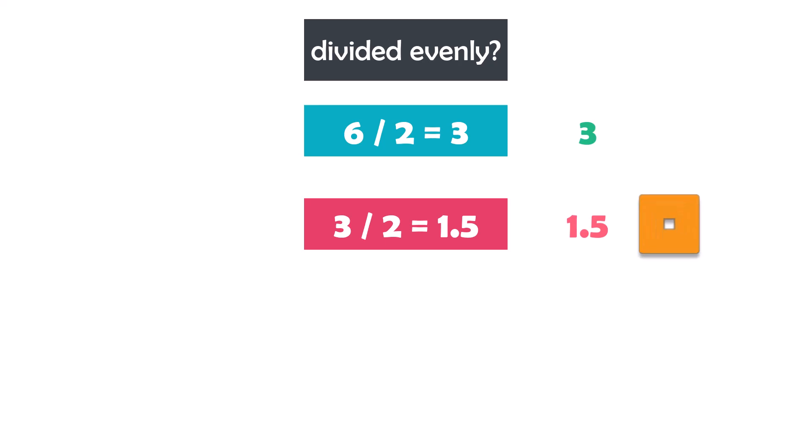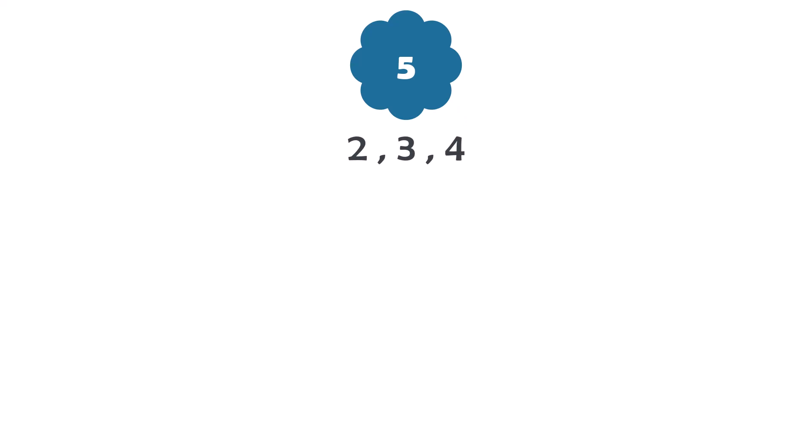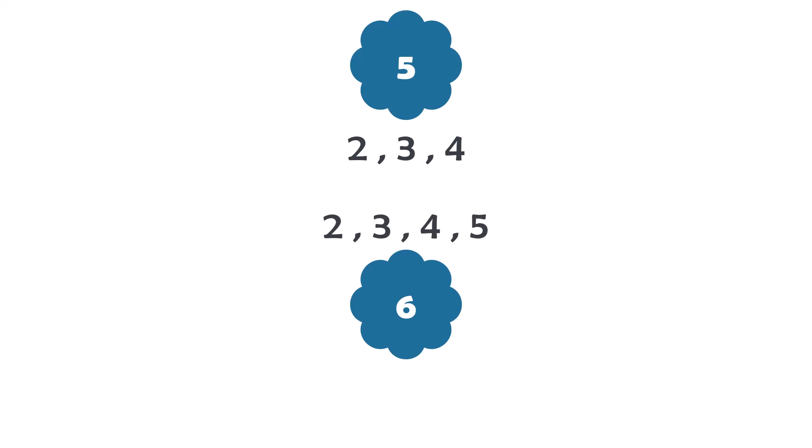To check if a number is prime, we can simply divide it by all the numbers less than itself and see if any of them divide it evenly. If we find any numbers that do, the number is not prime. For example, to check if 5 is prime, we divide it by all numbers from 2 to 4. To check number 6, we divide it by all numbers from 2 to 5.